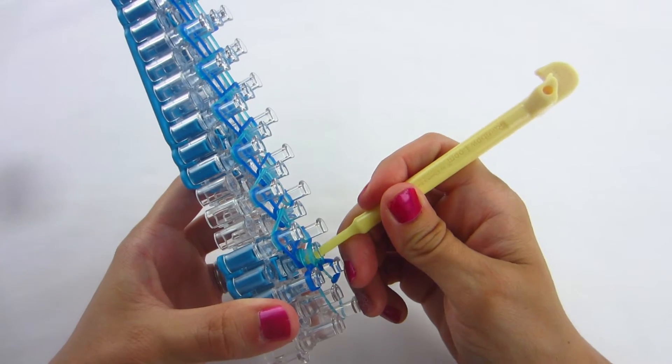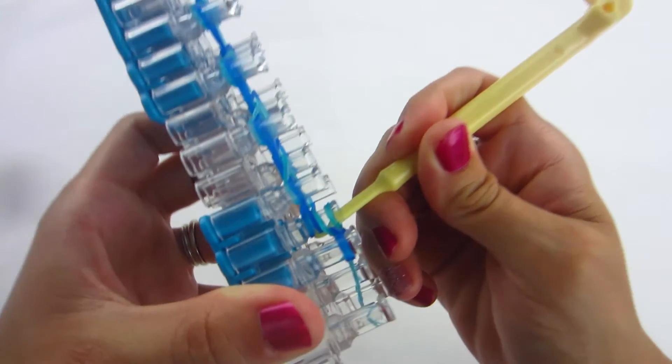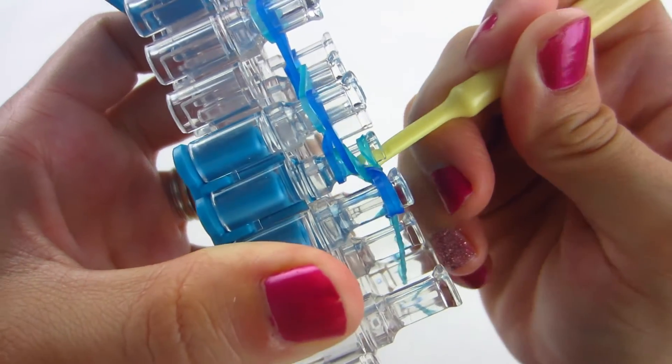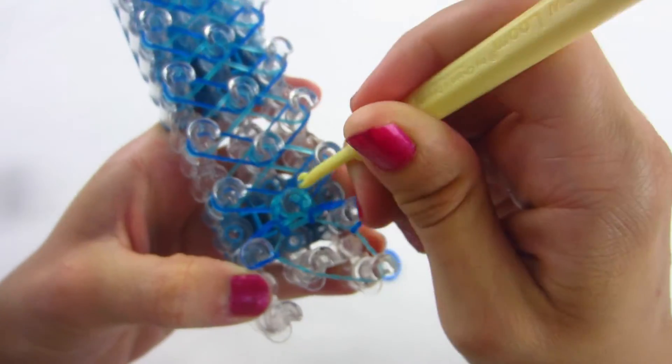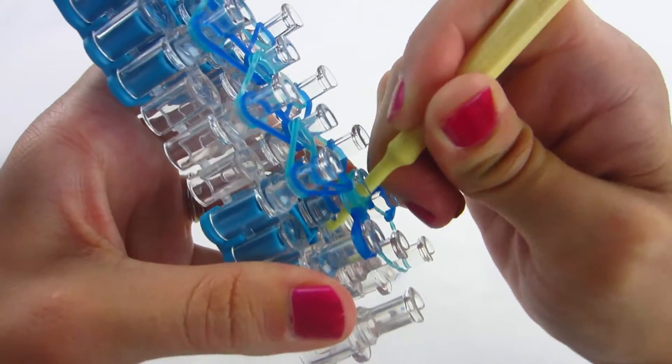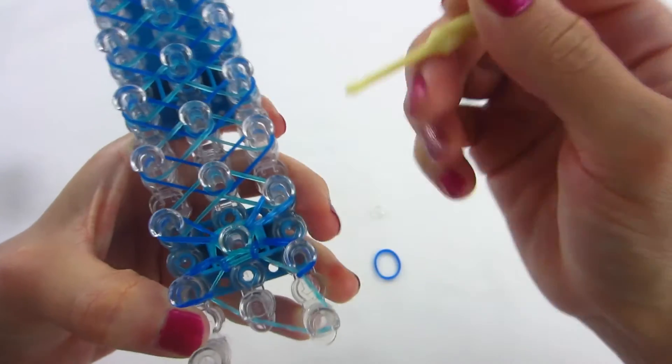You are going to go back down just like we did on the first peg. You are going to grab that top blue band that is in there, pull that one out and over, and again get the last blue band and put it over to the right peg.